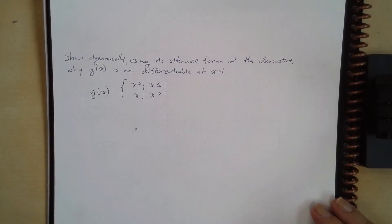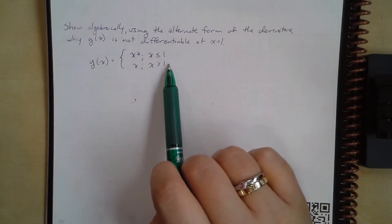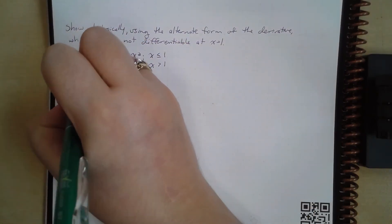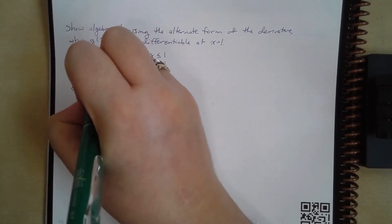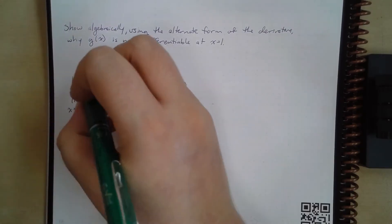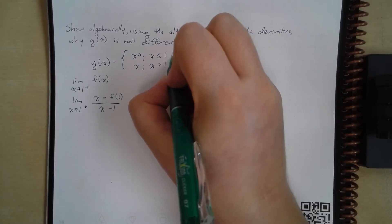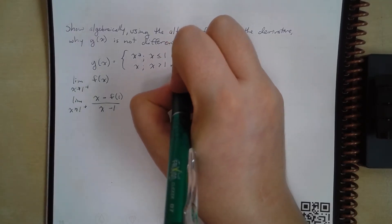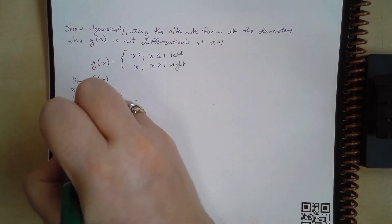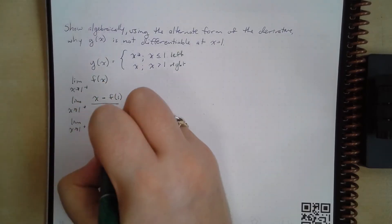Finally, one last example. We want to show algebraically, using the alternate form of the derivative, why g of x is not differentiable at x equals 1. Our target value is x equals 1. Finding the limit as x approaches 1 from the right: that's the limit as x approaches 1 from the right of f of x minus f of 1 over x minus 1, which simplifies to x minus 1 over x minus 1, giving us 1.